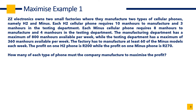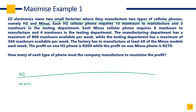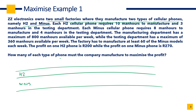There is another way to approach this: building a table. Take your information and start writing it in table format. We have ZZ Electronics manufacturing two types of phones — H2 and minus — so each gets its own row. H2 requires 10 man hours to manufacture, so you create a manufacturing column and write 10 there. Three hours for the testing department gives you a testing column with 3. Each minus phone requires 8 hours to manufacture and 4 hours for testing — so 8 and 4 go in those columns.